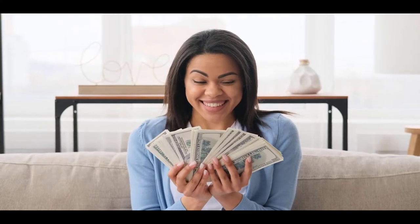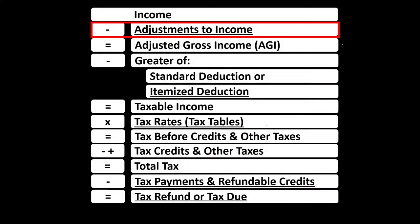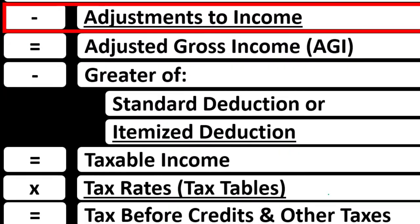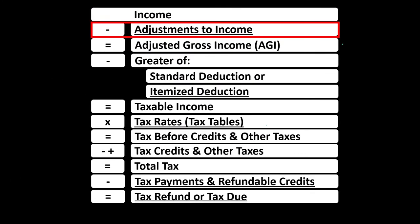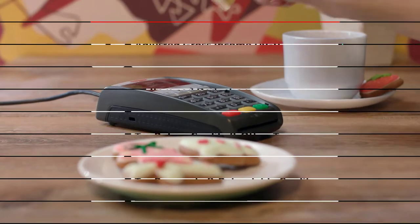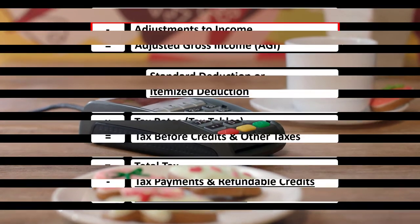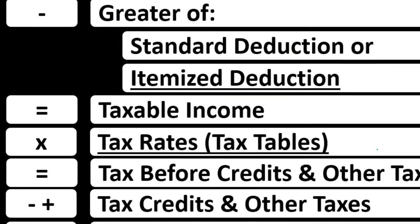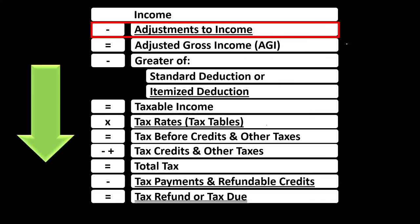Income minus the adjustments to income gives us the adjusted gross income — the AGI — which is important because the AGI is usually the number used, or at least started from, in order to calculate phase-outs on things like deductions and credits as income level goes up. Those phase-outs aren't usually starting from the top-line income but rather after the adjustments to income.